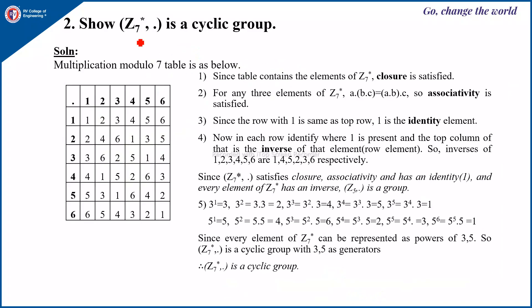You can show that Z7 star dot is also a cyclic group using the same table we already found, where 3 and 5 will be the generators for this cyclic group.